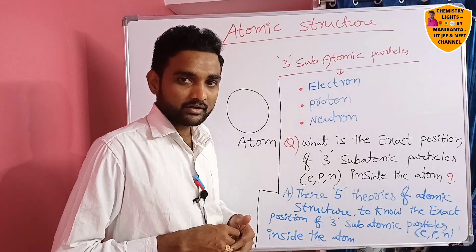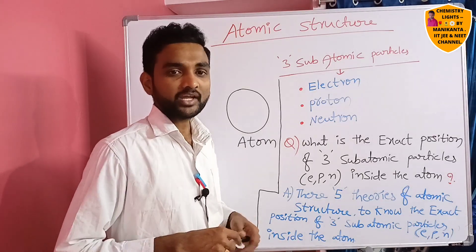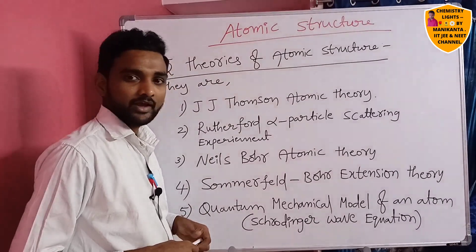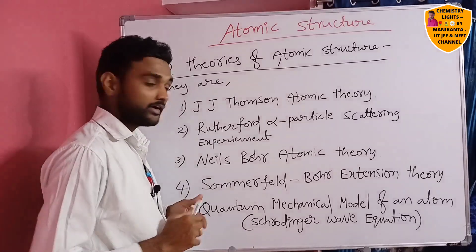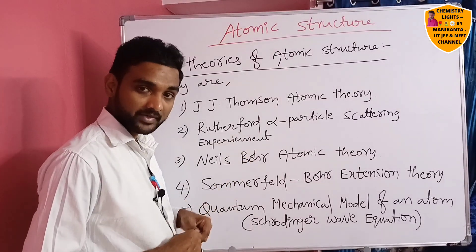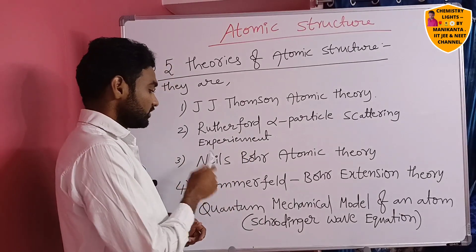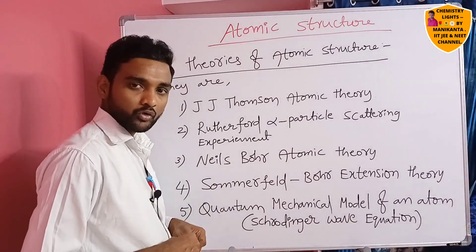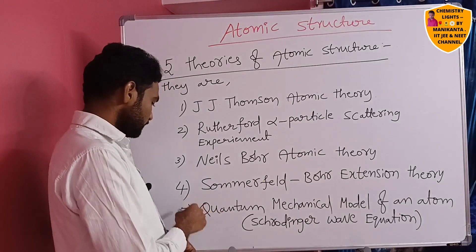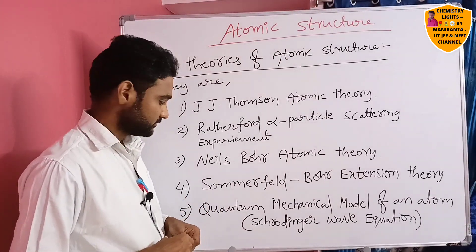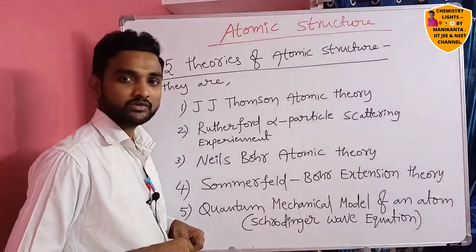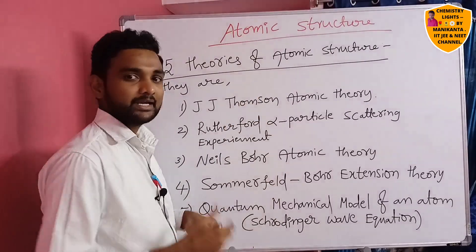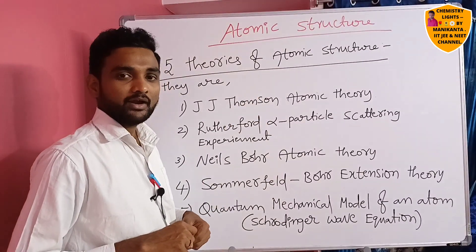These five theories are called theories of atomic structure. They are: first, J.J. Thompson's atomic model; second, Rutherford's alpha particle scattering experiment; third, Niels Bohr's atomic structure; fourth, Sommerfeld–Bohr extension theory; and fifth, the quantum mechanical model of an atom, also called the Schrödinger wave equation.